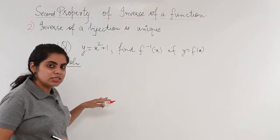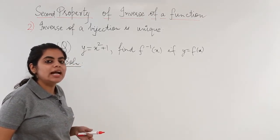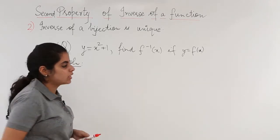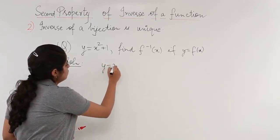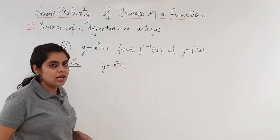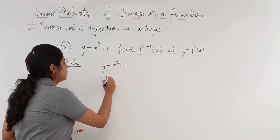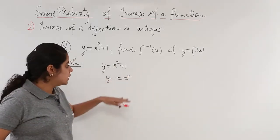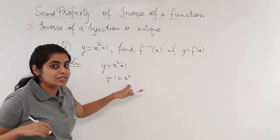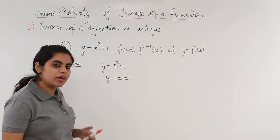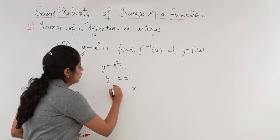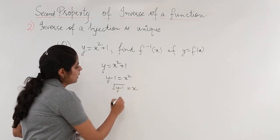In such questions, as we already know, if y is given you need to first find what is x. So if y is equal to x square plus 1, I have to go about the next step by finding y minus 1 is equal to x square. I just need to find x and not x square. So we would be taking square root on both of the sides and I would be having x is equal to under root y minus 1.